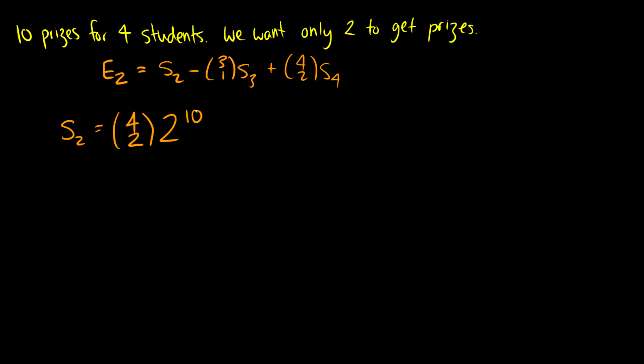So that's going to be 2 to the 10 because each prize will go to student A or student B. Okay for S3 now we'll just choose three out of the four students to not get prizes and all those prizes will be distributed to one student. S4 well we'll choose four out of four students to get no prizes and then each prize has zero options so just zero to the 10. So this last thing can't actually happen. Okay so now what we can do is we can just plug our values of S2 and S3 and we'll get our answer here.